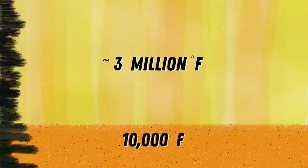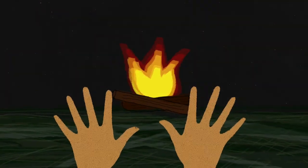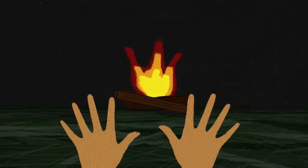While the surface is around 10,000 degrees Fahrenheit, the corona, the sun's outer atmosphere, is several hundred times hotter. That's the opposite of what happens with a fire when it gets cooler the farther away you get.